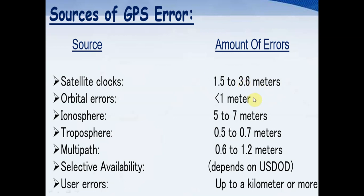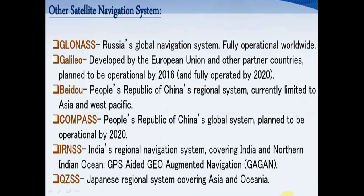Satellite clocks have an error range of about 1.5 to 3.6 meters. Orbital error is less than 1 meter. This is a very important factor — it is finding the location accurately without significant error. In the ionosphere, the error is less than 1 meter in some cases and between 5 to 7 meters in others. These are different error sources, but the system calculates location very accurately.